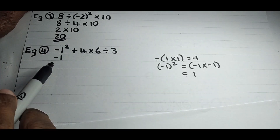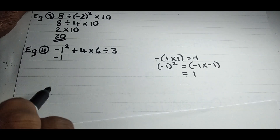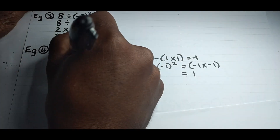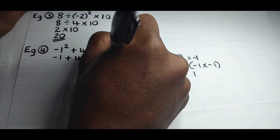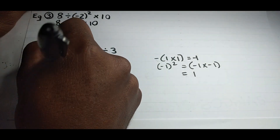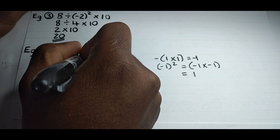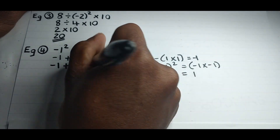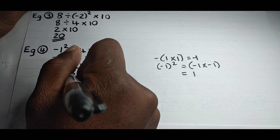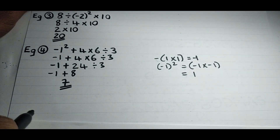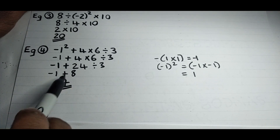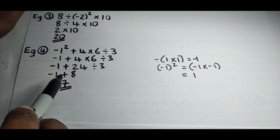So −1² gives us −1. Now we have −1 + 4×6÷3. For multiplication and division, working left to right: 4×6 = 24, then 24÷3 = 8. So we have −1 + 8 = 7. The answer for example four is 7. If you're not comfortable with integers, a video on that concept will be coming soon.